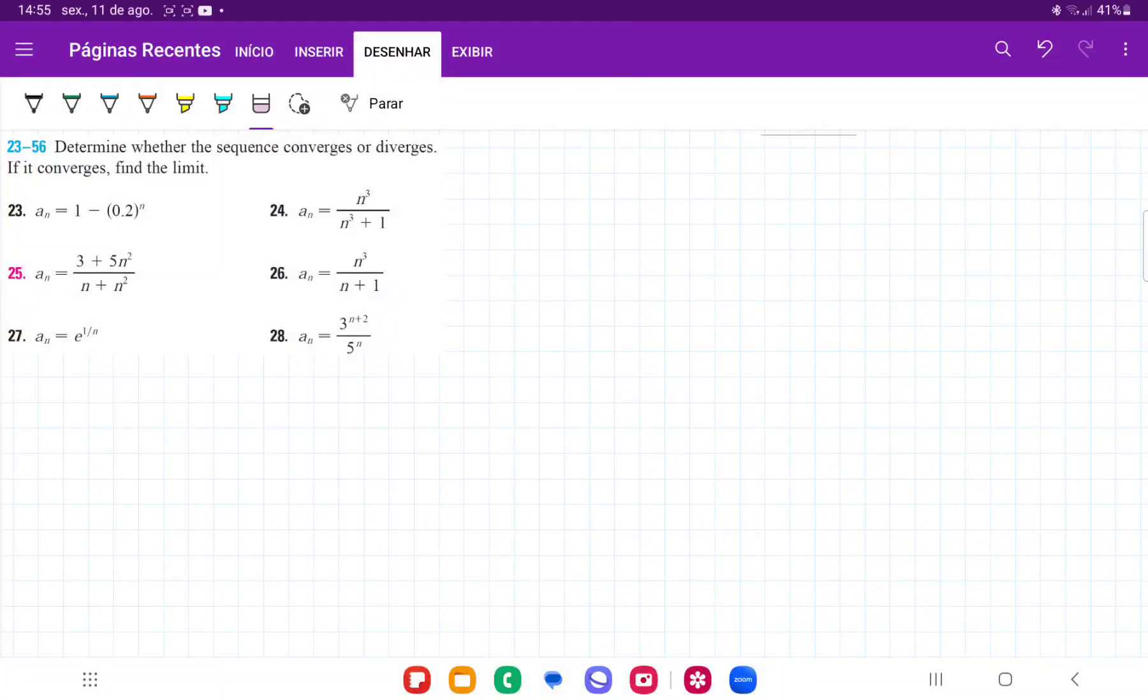So for number 27, they want us to determine whether the sequence converges or diverges. And now a sequence a_n, it converges if a_n tends to a specific limit as n approaches infinity.